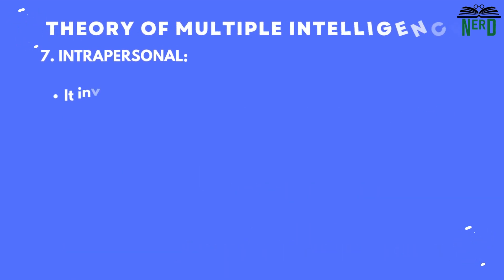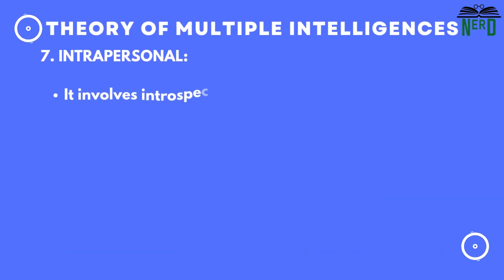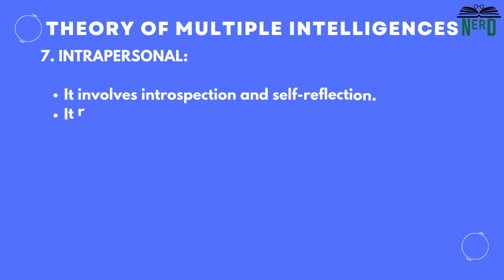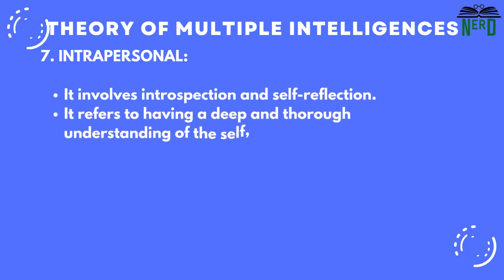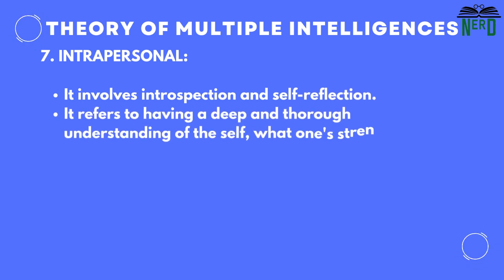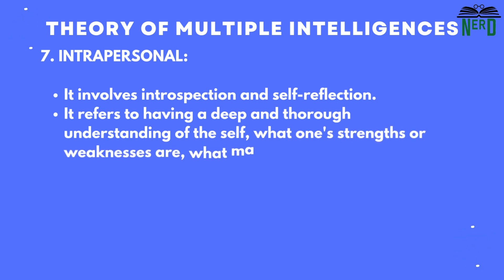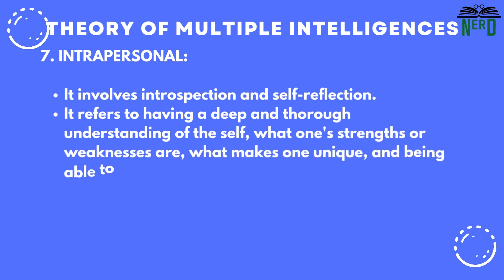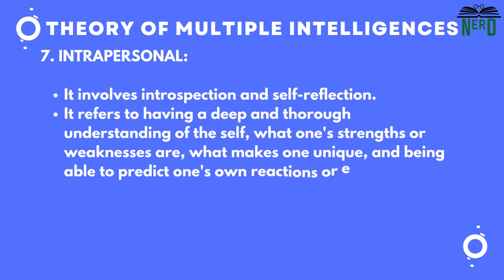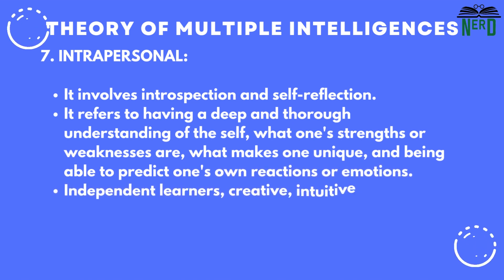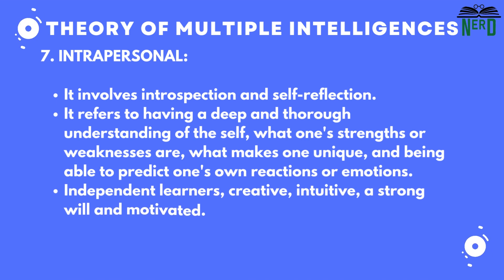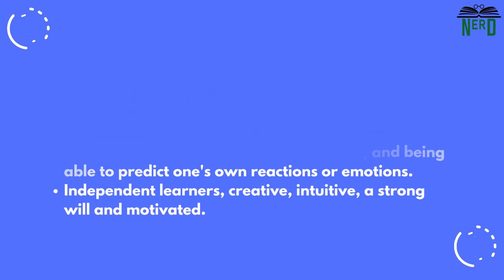Seventh is intrapersonal. It involves introspection and self-reflection. It refers to having a deep and thorough understanding of the self — what one's strengths or weaknesses are, what makes one unique, and being able to predict one's reactions or emotions. They are independent learners, creative, intuitive, with a strong will and motivated.